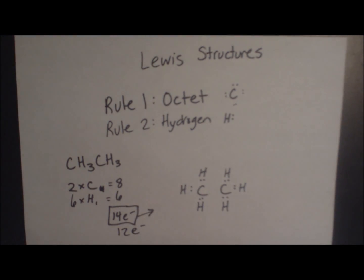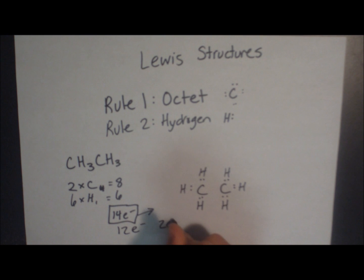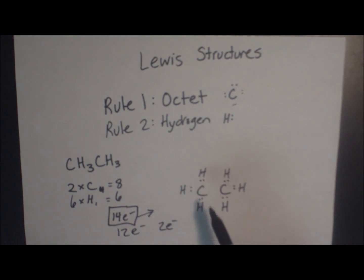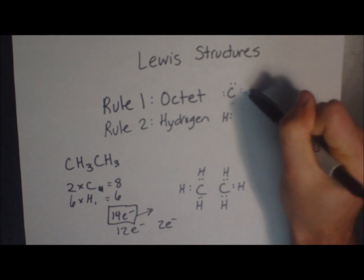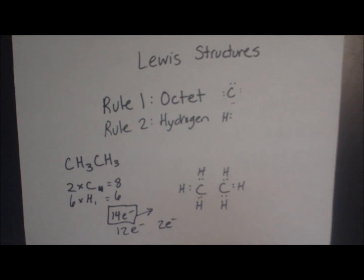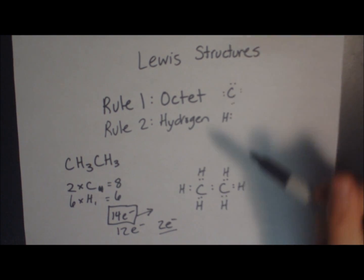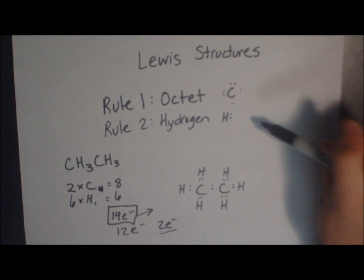So now that we've used twelve electrons, we only have two electrons to go. Well, these carbons each have six electrons around them. To satisfy this octet rule, we need to add two more electrons to each of them, and since we only have two to play with, add them to the middle. That satisfies both the octet rule and the hydrogen rule.